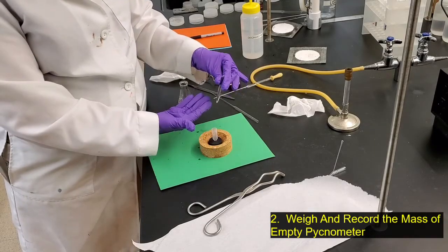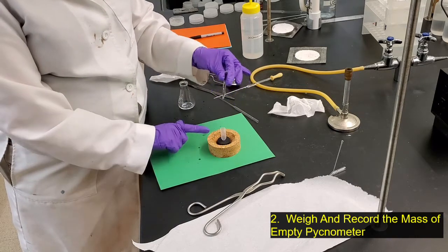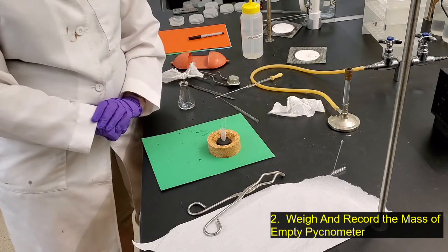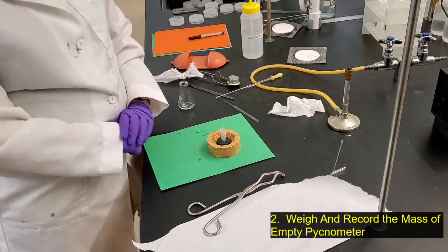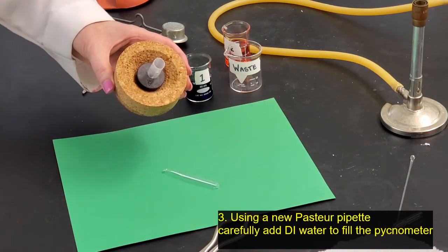This cork ring with the rubber stopper is a pycnometer holder. I need to get a background weight on that, a tare weight, and then I will put the empty pycnometer in and weigh it. I will only get that background weight of the cork one time.